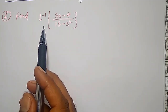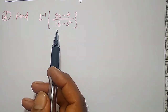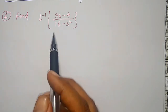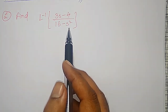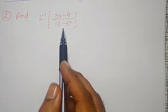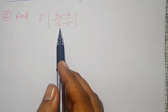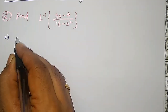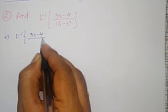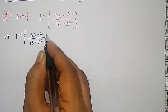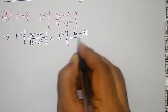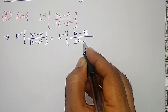Next, find the inverse Laplace transform of (3s - 4)/(16 - s²). It looks like it is in standard form, but it should be in s² minus a² or s² plus a² form. So I will multiply numerator and denominator by minus one to get the standard form. That gives inverse Laplace transform of (4 - 3s)/(s² - 16). Now the denominator is in standard form.